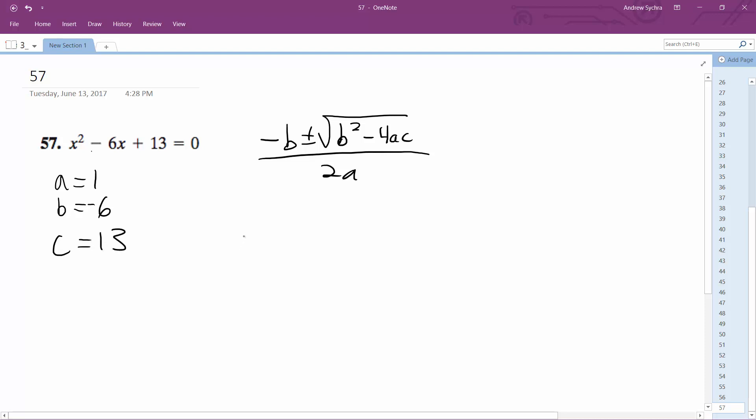All right, so opposite of b - so 6 plus or minus the square root of negative 6 squared minus 4 times a times c, all over 2a which is just 2 times 1.